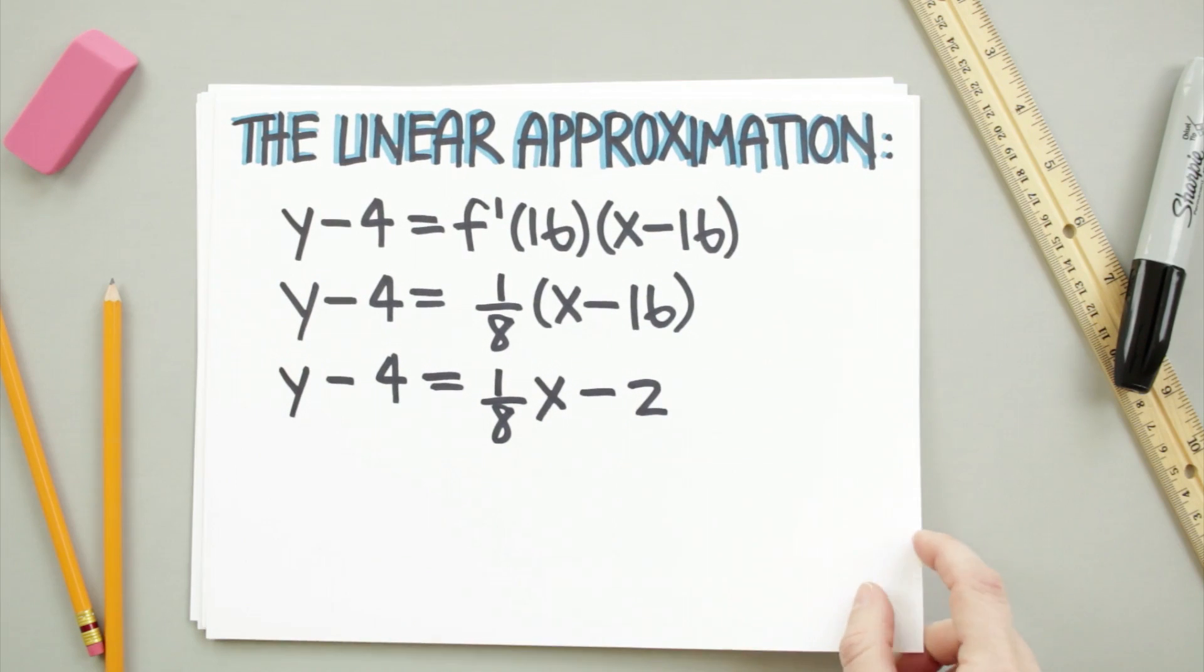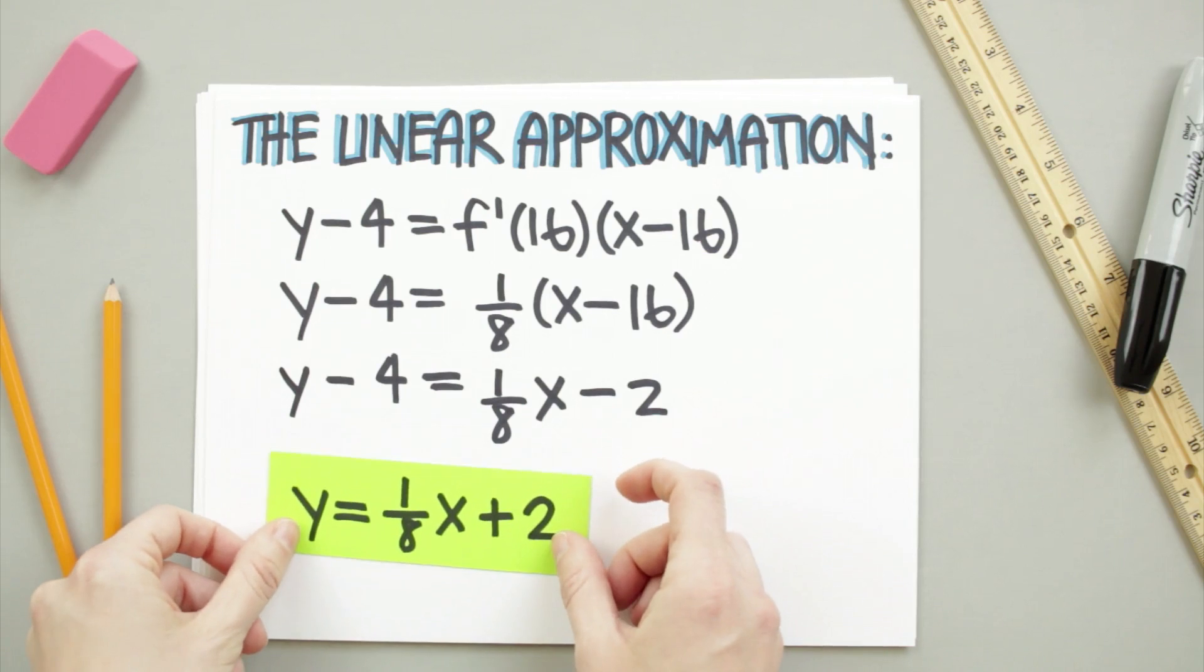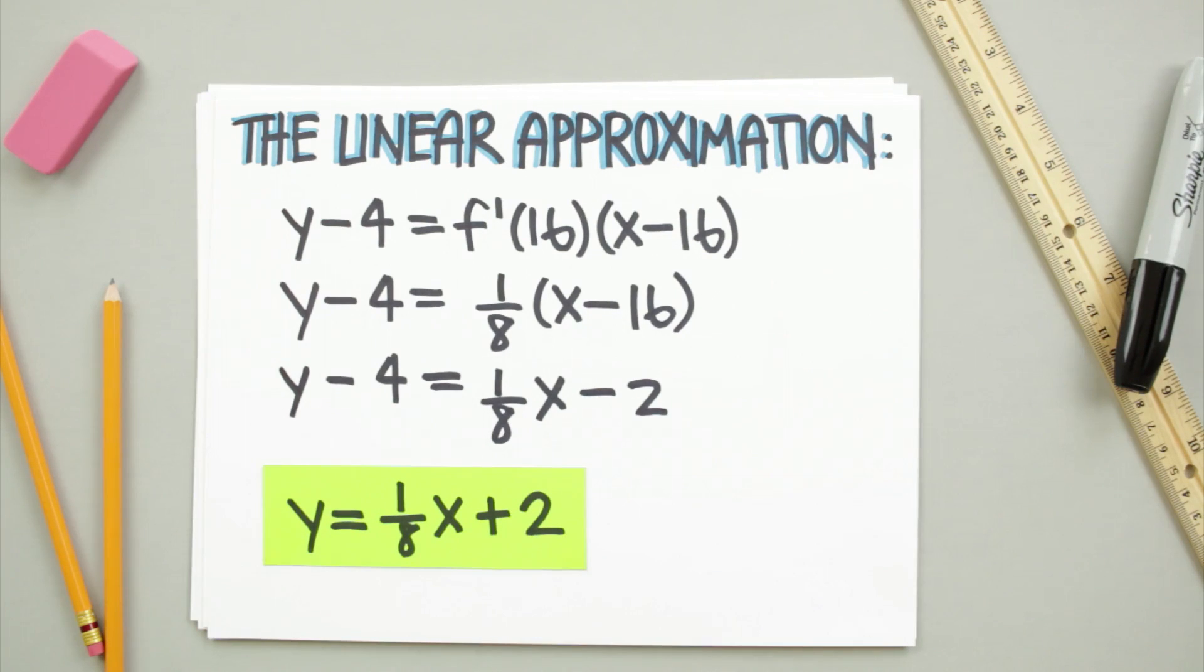The equation for the line we're using for our linear approximation, then, is y minus 4 equals one-eighth times x minus 16. After a bit of algebra, we get the simple equation y equals one-eighth x plus 2.